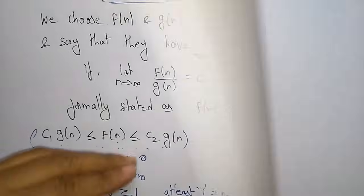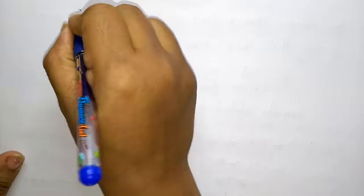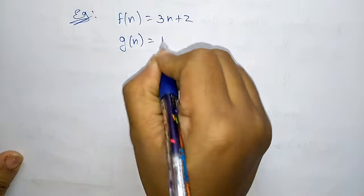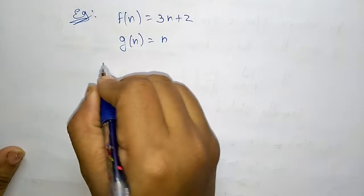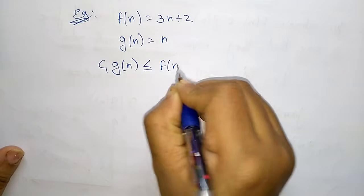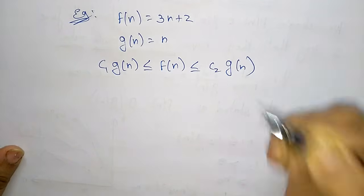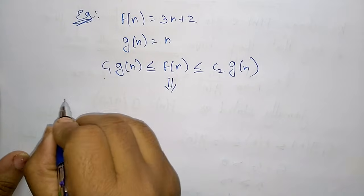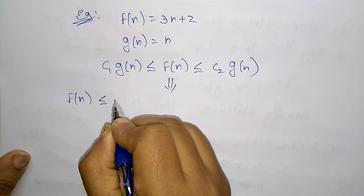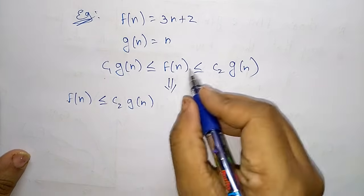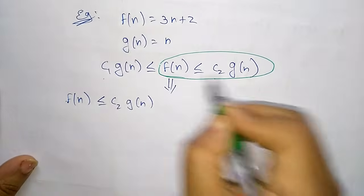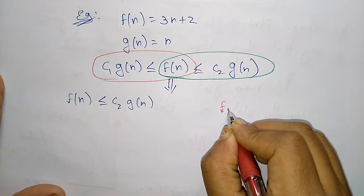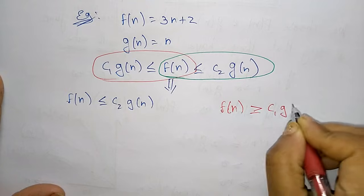Let us take one simple example for theta notation. Let f(n) = 3n + 2 and g(n) = n. The formula is c1·g(n) ≤ f(n) ≤ c2·g(n). We divide this into two conditions: the first condition is f(n) ≤ c2·g(n), and the second condition is f(n) ≥ c1·g(n).